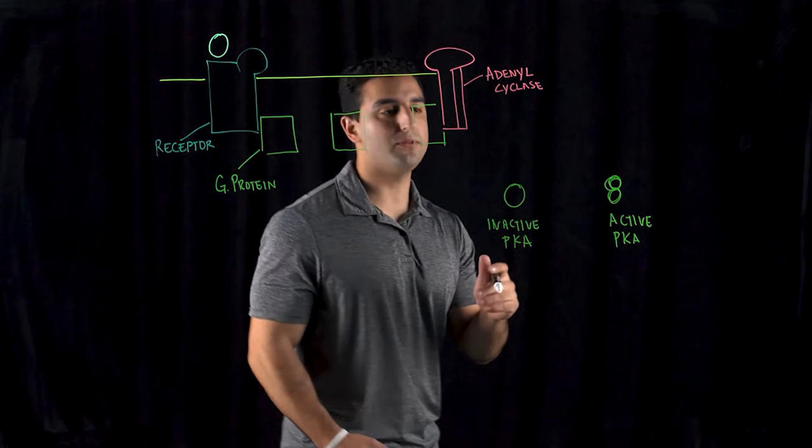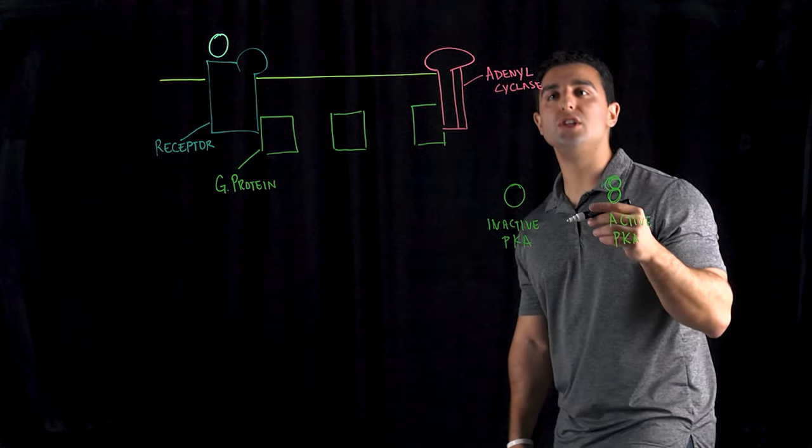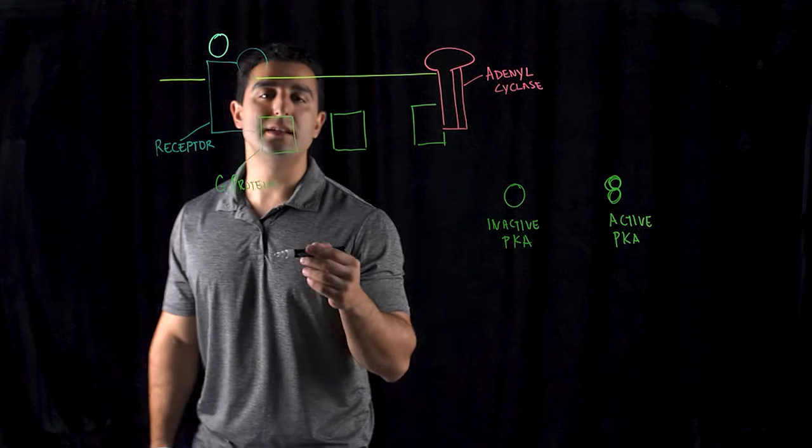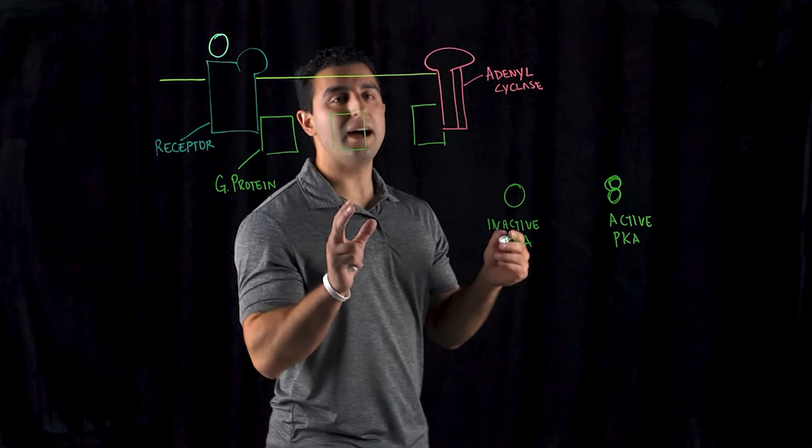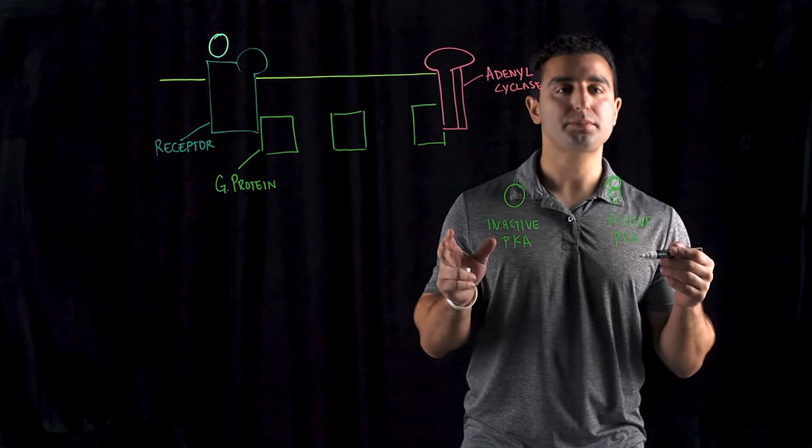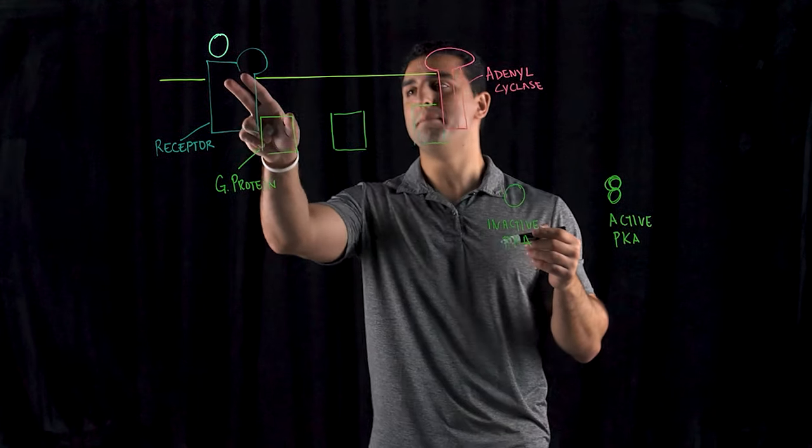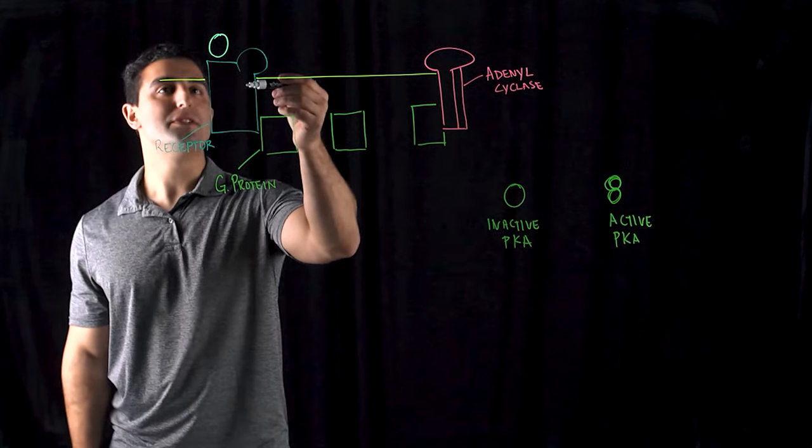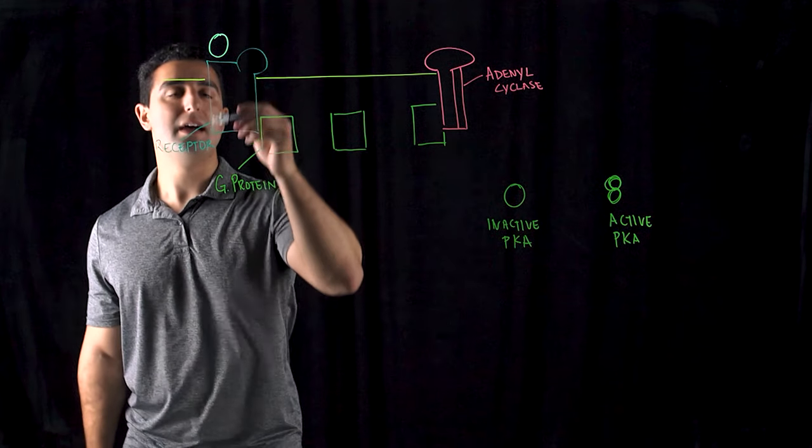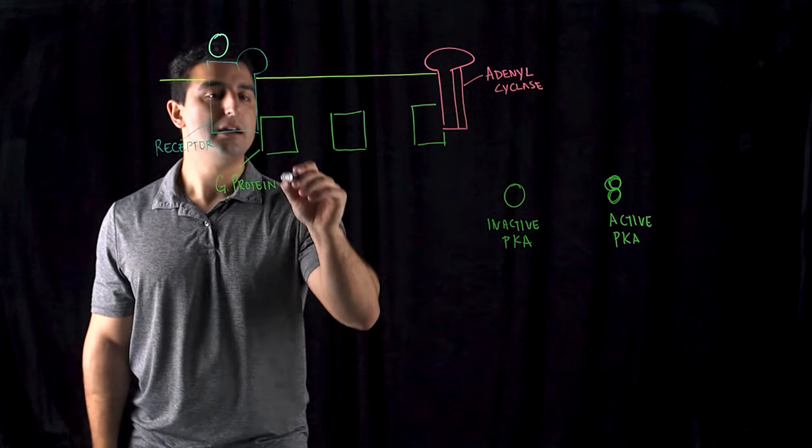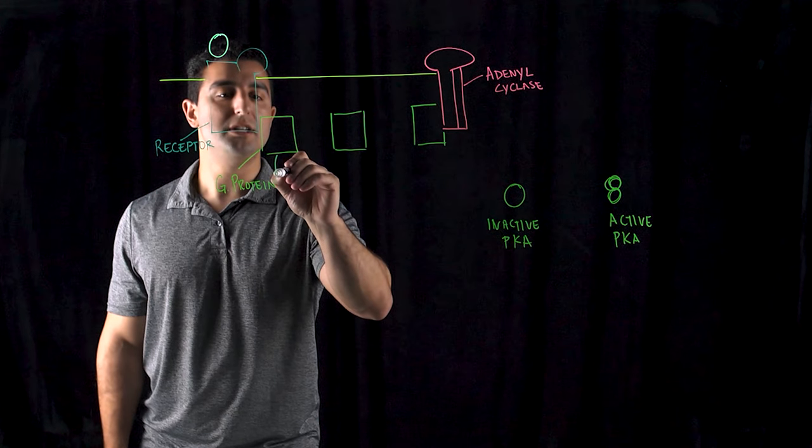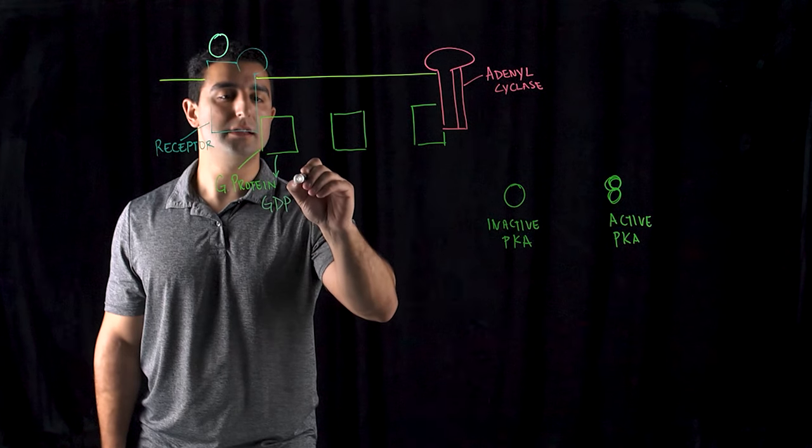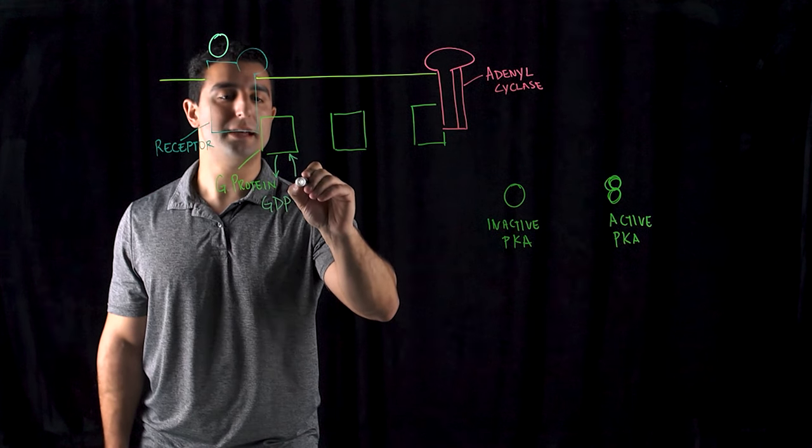The G-protein is responsible for the exchange of GTP and GDP - guanine triphosphate and guanine diphosphate. When GDP is present, it is inactive and bound to this receptor. However, when this receptor becomes bound to the molecule, when epinephrine comes in and binds, an exchange takes place. The GDP leaves and GTP comes in. Now it becomes active.